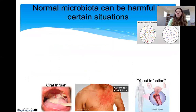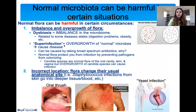The normal microbiota can also be harmful in certain situations. Two situations I want to discuss: first, when we have an imbalance or overgrowth of your normal flora. Imbalance — called dysbiosis — means your microbiome is not balanced. You don't have the right proportions of different bacteria; one bacterium may be more dominant than another. Dysbiosis can lead to digestion problems and obesity.